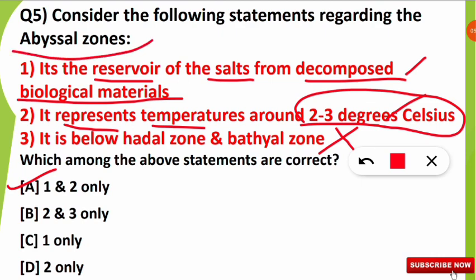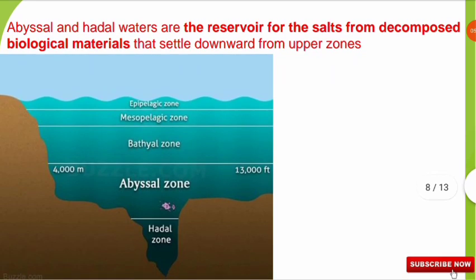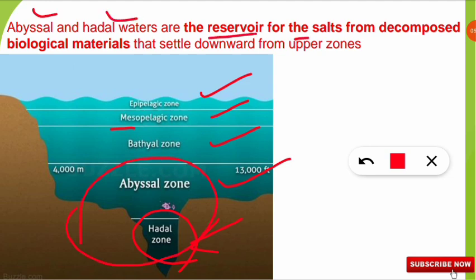Looking at this picture of ocean zones: the uppermost zone is the epipelagic zone, followed by the mesopelagic zone (meso means middle layer), then the bathyal zone, the abyssal zone, and in some cases the hadal zone, which is the deepest part of the ocean. You should note that both the abyssal and hadal zones are reservoirs of salts from the decomposed biological materials that settle down from upper zones.